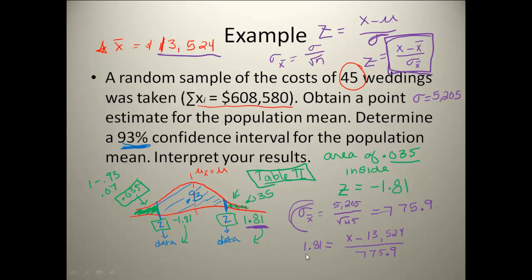Well, in order to solve this, I need to take both sides times 775.9 in order to get rid of it on the right side. And then I'm left with 1404.4 is equal to x minus that 13,524.